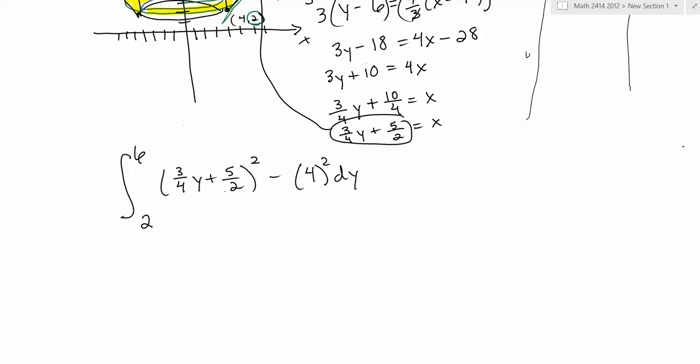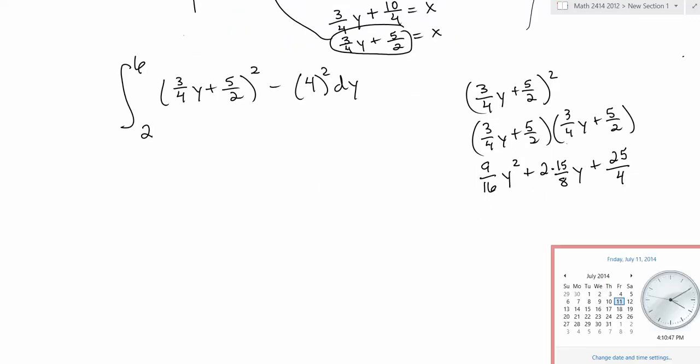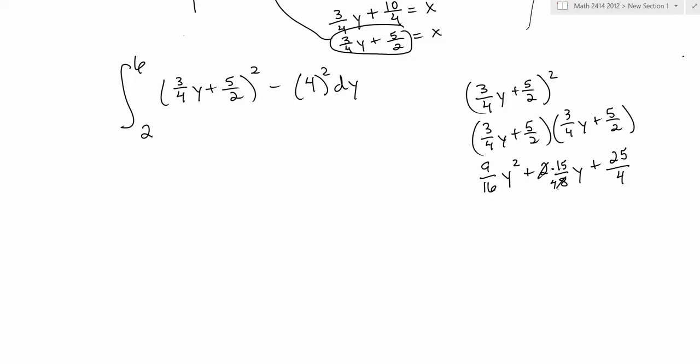So we need to clean up this 3 fourths y plus 5 halves squared before we integrate, so let's think about that. 3 fourths y plus 5 halves squared is 3 fourths y plus 5 halves times 3 fourths y plus 5 halves. And if you work this out, you're going to get 9 sixteenths y squared. Now 3 fourths y times 5 halves is going to be 15 eighths, and you have that twice. So you have 2 times 15 eighths y plus 25 fourths. So I'm going to do some arithmetic here to kind of simplify things as I go. So what I would do here is write this as, 2 goes into 8 four times, so that's 15 fourths. So I have 9 sixteenths y squared plus 15 fourths y plus 25 fourths.